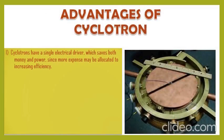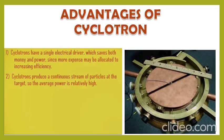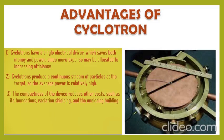The advantages of the cyclotron are: first, a cyclotron uses a single electrical design which saves both money and power, since resources can be allocated to increasing efficiency. Second, a cyclotron produces a continuous stream of particles at a target, giving a relatively high average power. Third, it is a compact device which reduces the cost of foundation, radiation shielding, and the enclosing building.